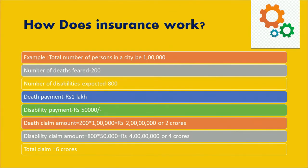Similarly, when we calculate the disability claim, it will be 50,000 multiplied by 800, which equals 4 crores. So the total claim amount will be the summation of the two: 2 crores plus 4 crores, which is 6 crores. Now, to take care of this contingency of 6 crores per year, what would be the contribution expected from each resident? Can this 6 crore amount be shared equally amongst all individuals so the burden per head is lessened? Imagine if the 6 crores had to be borne only by those 1000 people exposed to the risk — the amount per head would have multiplied significantly.